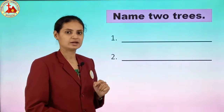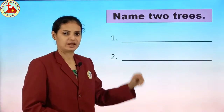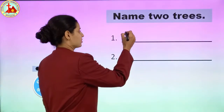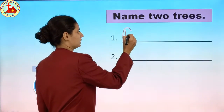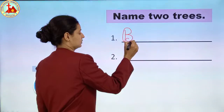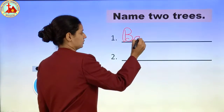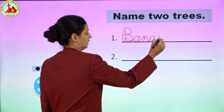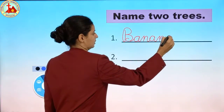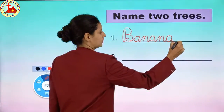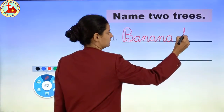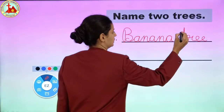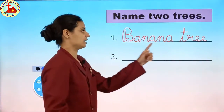I am going to write banana tree in the first blank. The first letter should be cursive capital. Write spelling of banana: cursive capital B, A, N, A, N, A. Banana tree: T, R, double E. Banana tree.